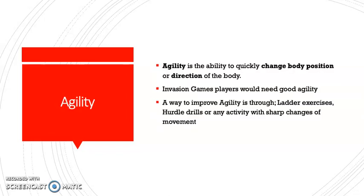Next up is agility. Agility is the ability to quickly change body position or direction of the body — simply, it's the ability to change direction really quickly. Invasion games players would need great agility. These include rugby, football, netball, and basketball — games where people have to quickly turn on the spot and change direction. A cheetah has fantastic agility; they can jump in the air and change direction whilst in midair. Ways to improve agility include ladder exercises, hurdle drills, or any activity with sharp changes in movement.